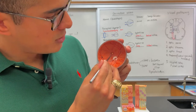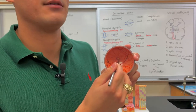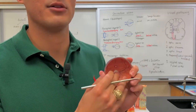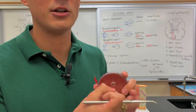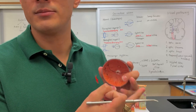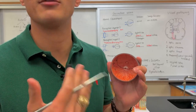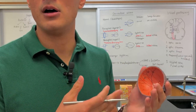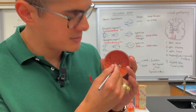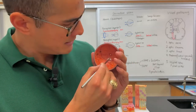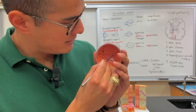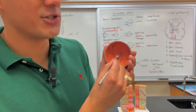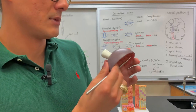The macula lutea is the region where there is a high density of cones. Cones are for colored vision, and rods are for dark vision — seeing black and white — and also for peripheral vision, because there are a lot more rods than cones. But there is a concentration of cones found at this region, which is why it's called the macula lutea and then the fovea centralis — lutea refers to light, and the fovea centralis is where the cones are concentrated.